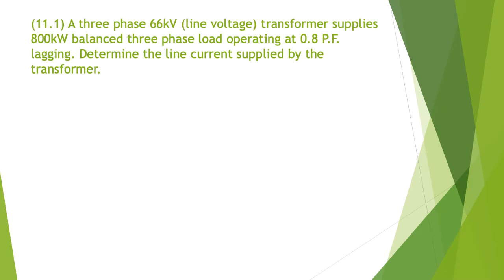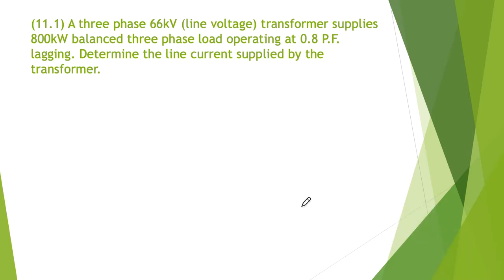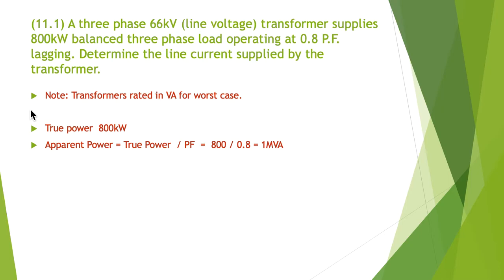Okay, so how are we going to go about doing that? The first thing we need to note is transformers are rated in VA for worst case. That's the apparent power - transformers are rated in apparent power because that's the worst possible case.